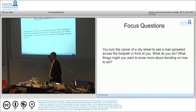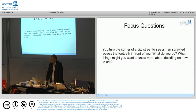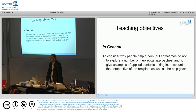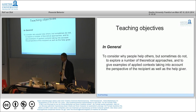Consider a typical situation: you turn a corner to see a man sprawled across a footpath in front of you. What would you do? What things might you want to know before deciding how to act? Of course we think we would do something, but let's look at what people actually do in practice, how researchers have constructed clever experiments, and why people help others but sometimes do not.